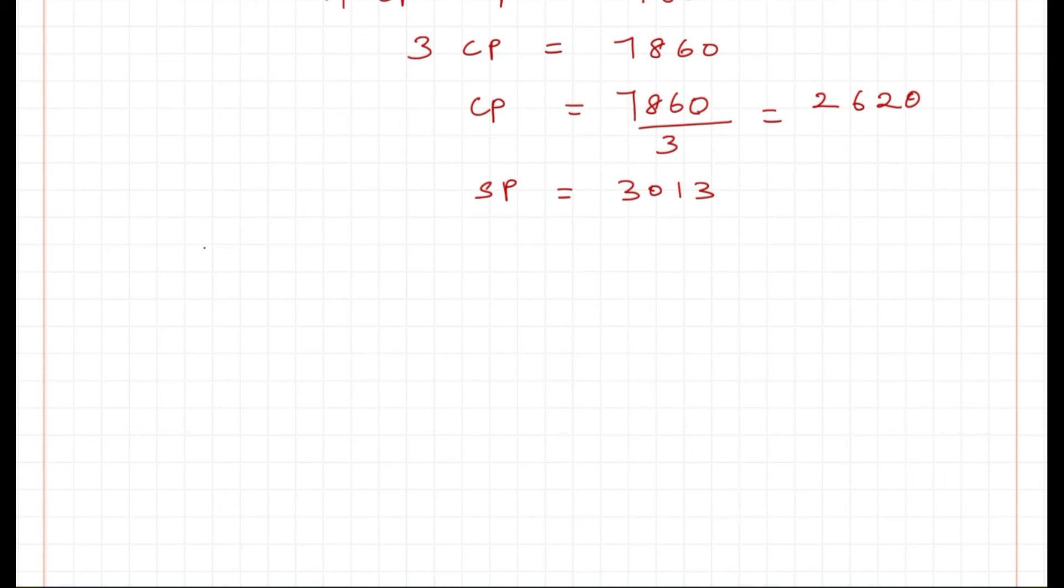Now we have to find the profit percentage. The profit percentage can be found using the formula: selling price minus cost price divided by cost price times 100, because the selling price is more now.